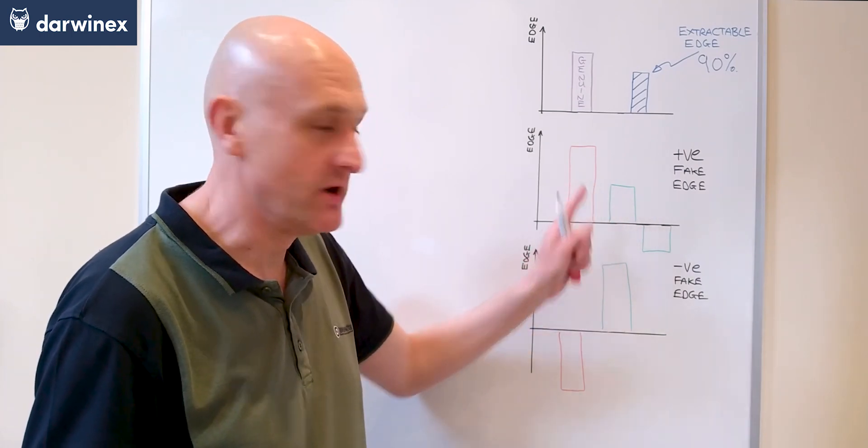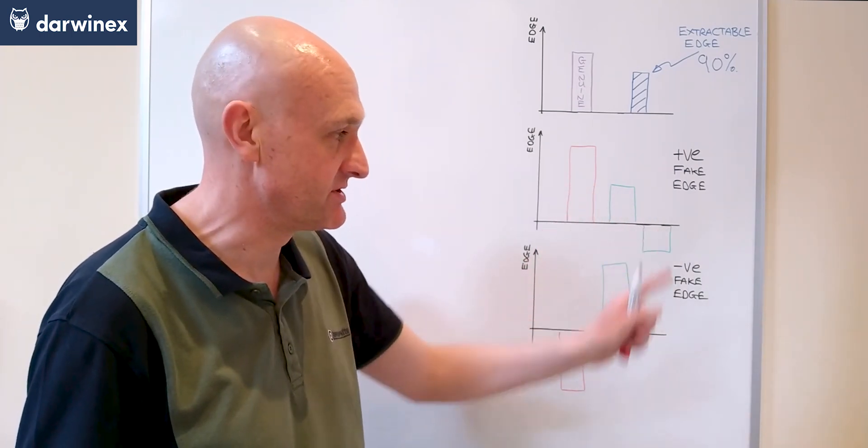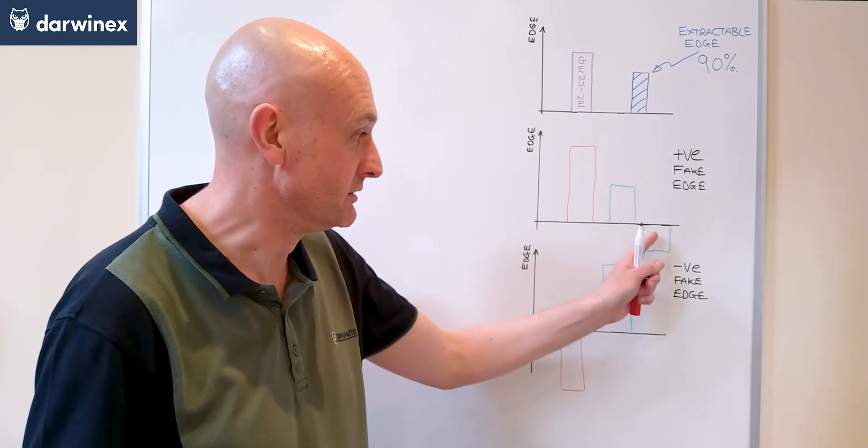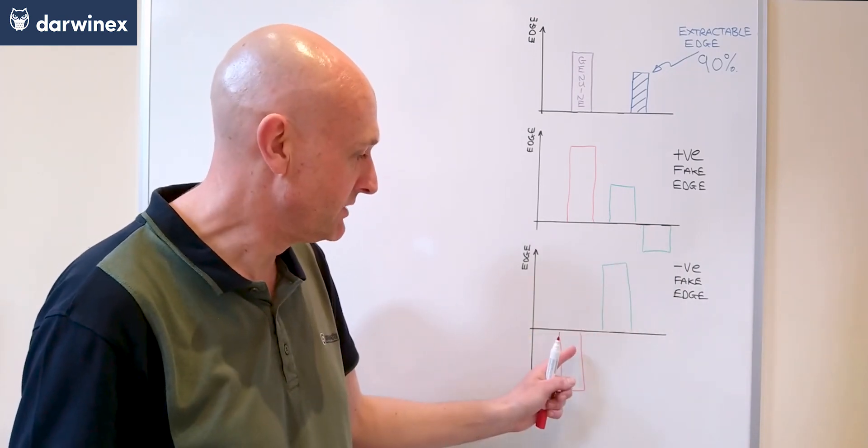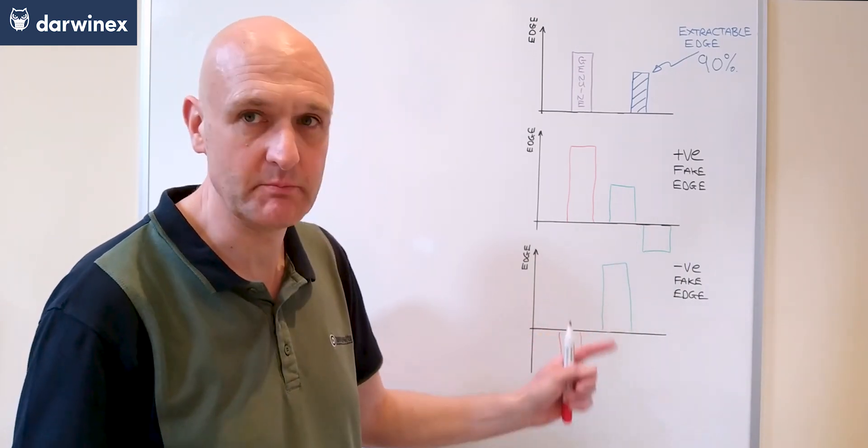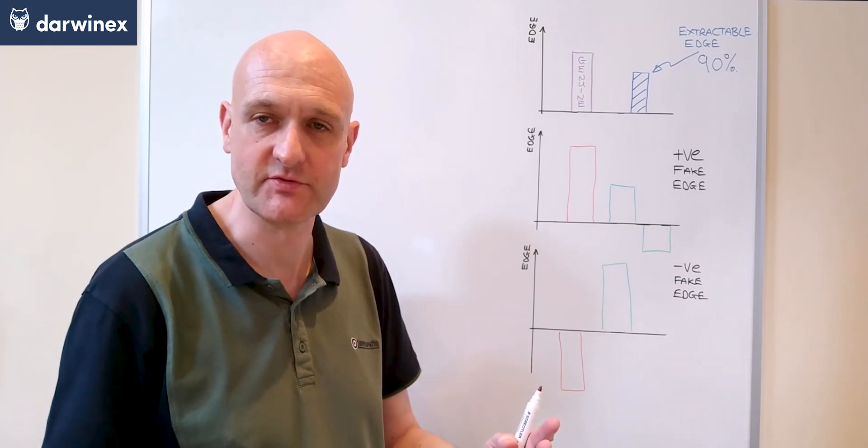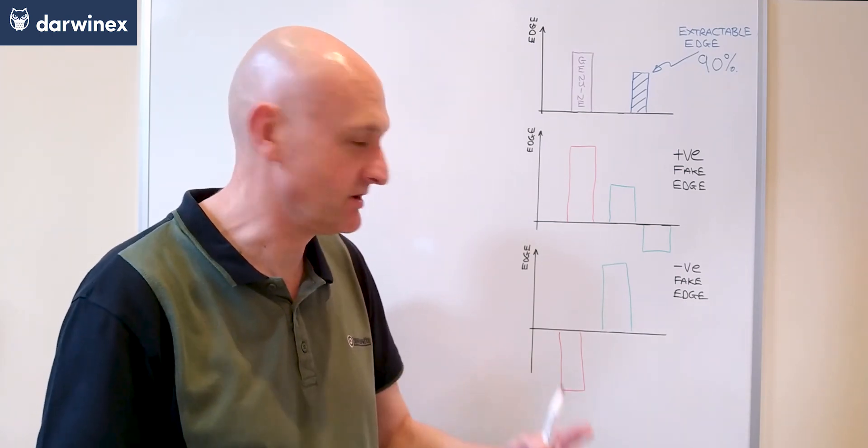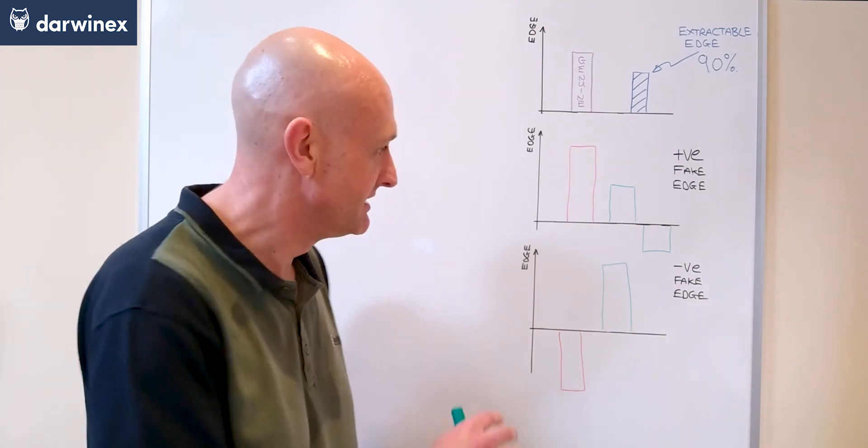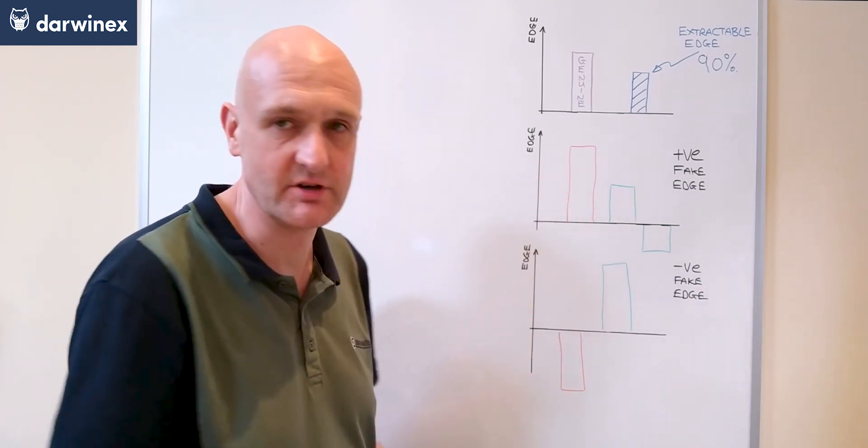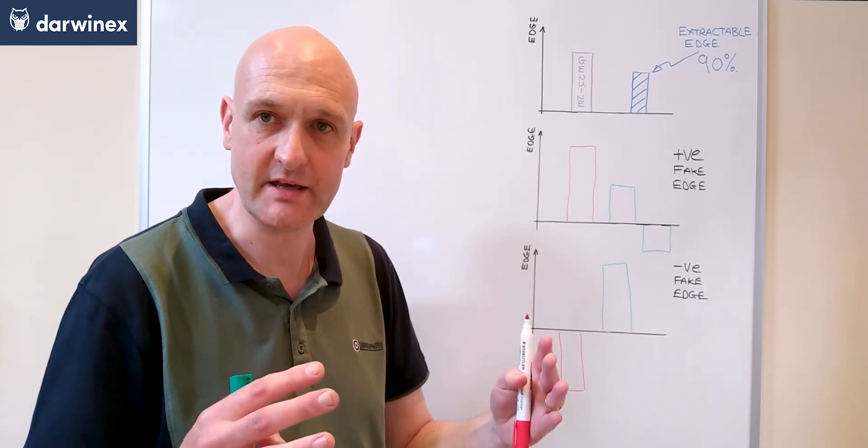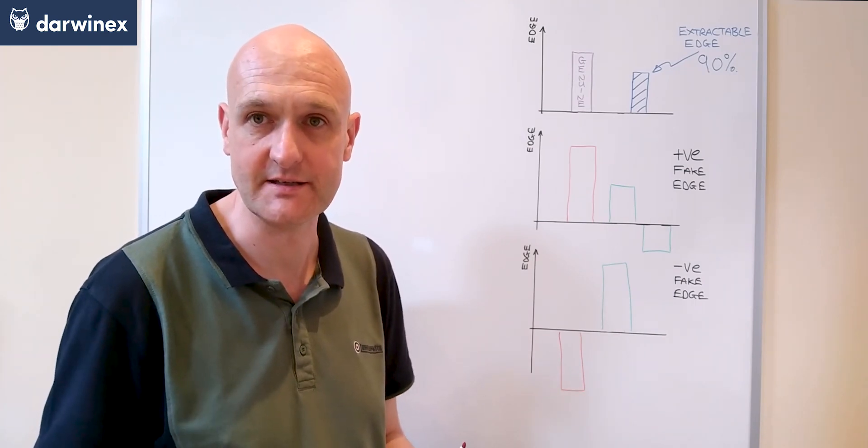So this one's the worst situation because here we could put a system live and lose money. With this one we're simply not choosing the best parameters from our optimization so we're not extracting them effectively. So two different scenarios there, both caused by overfitting of our data.